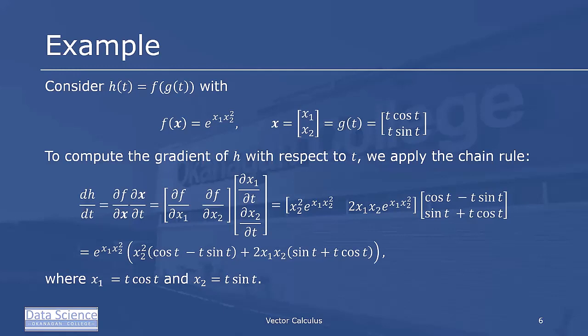So plugging in df dx1, we know df dx1, it's just going to be x2 squared e to the x1 x2 squared. And we know df dx2, that's simply going to be 2x1 x2 e to the x1 x2 squared. We know dx1 dt, that's going to be cos t minus t sin t by the product rule. And dx2 dt is going to be sin t plus t cos t.